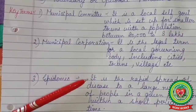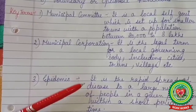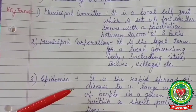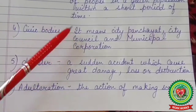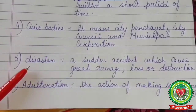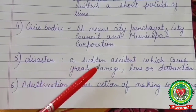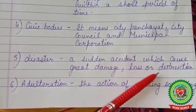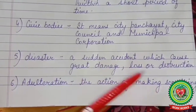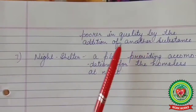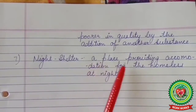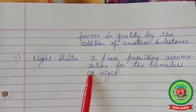3. Epidemics: It is the rapid spread of a disease to a large number of people in a given population within a short period of time. 4. Civic Bodies: It means city, panchayat, panchayat council and municipal corporation. 5. Disaster: A sudden accident which caused great damage, loss or destruction. 6. Adulteration: The action of making something poorer in quality by the addition of another substance. 7. Night Shelter: A place providing accommodation for the homeless at night.